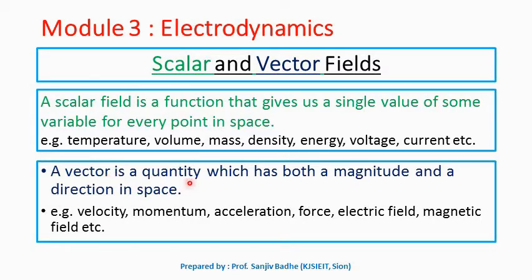Now, a vector is a quantity which has both magnitude and direction in space. We can define vector field as a function that takes a point in space and returns a vector. Some examples of vector field are velocity, momentum, acceleration, force, electric field, magnetic field. All these are vector fields.